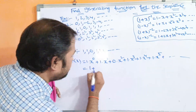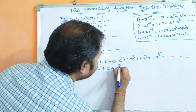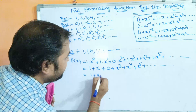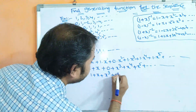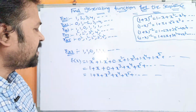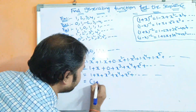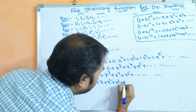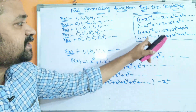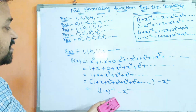Simplifying: 1 + x + 0 + x³ + x⁴ + x⁵ + ... The formula for (1-x)^(-1) is 1 + x + x² + x³ + ..., but here the x² term is missing. So we add and subtract x²: (1 + x + x² + x³ + ...) - x², which equals (1-x)^(-1) - x². This is the generating function for this sequence.